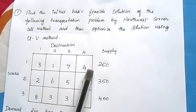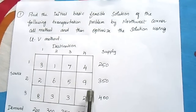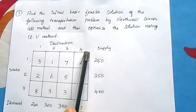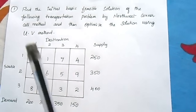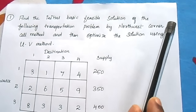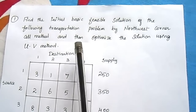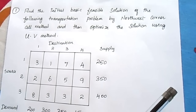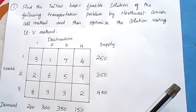This is the problem. The transportation model has three rows (sources) and four columns (destinations). Supply and demand values are given. The problem asks you to find the basic feasible solution using the Northwest corner rule, and then optimize the solution using the UV method.